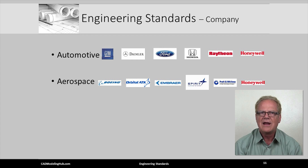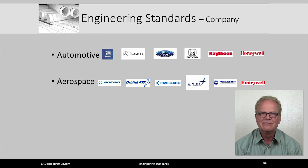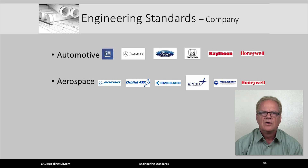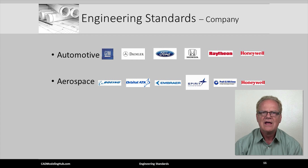Here is a short list of some aerospace companies. They, like their automotive counterparts, have well-defined modeling and drafting standards. These standards are used to maintain modeling and drawing consistency within their company and across their vast supply chain. In 2014, Boeing disclosed they use more than 6,000 suppliers to produce their offering of commercial airplanes. Without a well-established set of company standards adhered to both internally as well as across their supply chain, they would have a difficult time bringing the millions of components together into finished, manufactured airplanes.